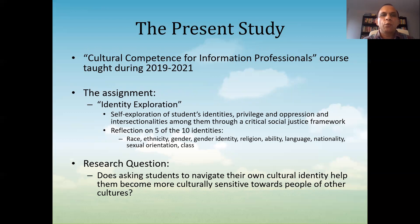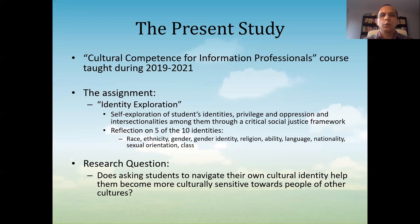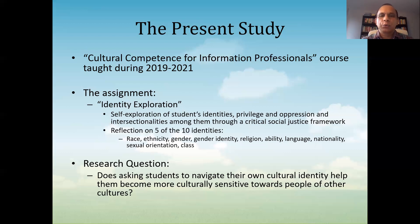The goal of this assignment was to ask students to self-explore and navigate their own identity through self-exploration. They were asked to reflect on five of ten identities: race, ethnicity, gender, gender identity, religion, ability, language, nationality, sexual orientation, and class. The goal was to create awareness about race, privilege, oppression, and intersectionality through a critical justice framework. The research question was whether asking students to navigate their own cultural identity helped them become more culturally sensitive towards people of other cultures.